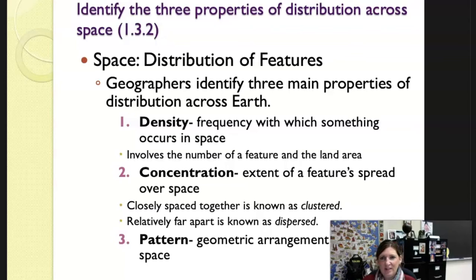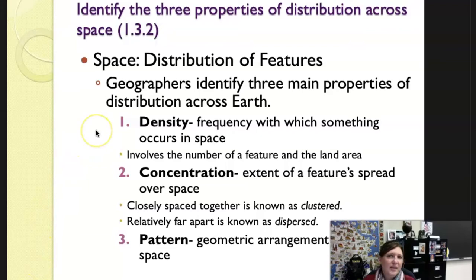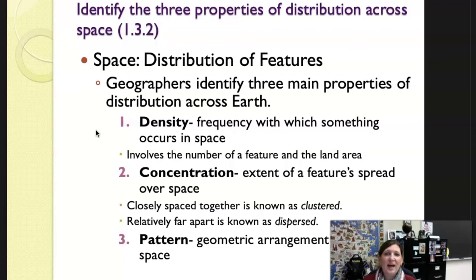Geographers identify three main properties of distribution across the Earth: density, concentration, and pattern. Density is the frequency with which something occurs in space; it involves the number of a feature and the land area. In the desk example, my classroom size has not changed, but I went from 30 desks to 15. So the density decreased because there are fewer features in the same land area.